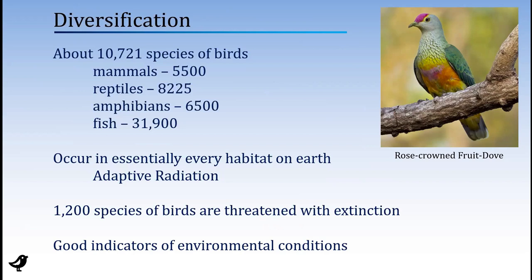One thing about birds that fish cannot claim is that birds occur in basically every habitat on Earth — in the deserts, in the Arctic, in the Antarctic, way out on the ocean. They're everywhere except the deep sea. They're not diving a mile underneath the ocean with whales, but they're on the surface of the sea and certainly over the sea all over the world. This is really a superb example of adaptive radiation. The species have gone into all these different habitats, and we'll look at some of the adaptations that allow them to exploit basically everything.